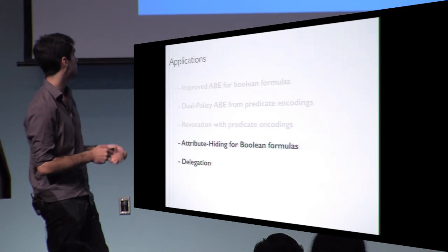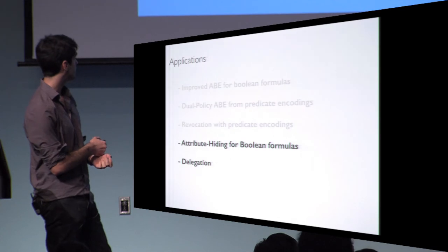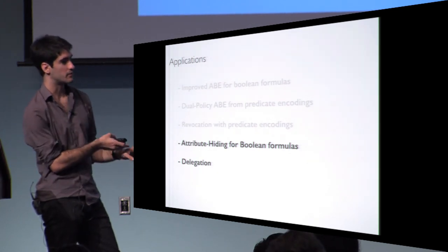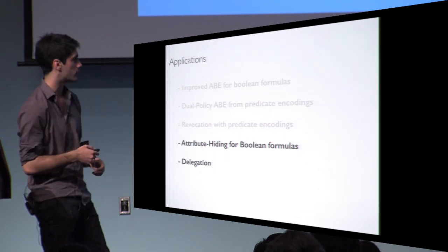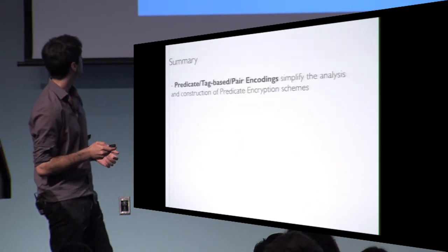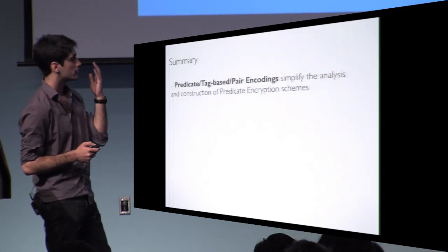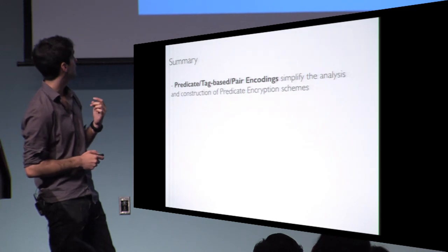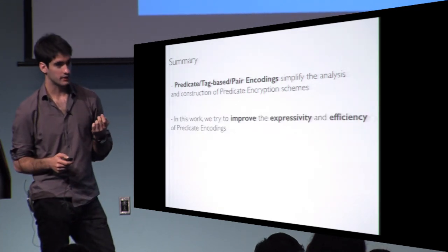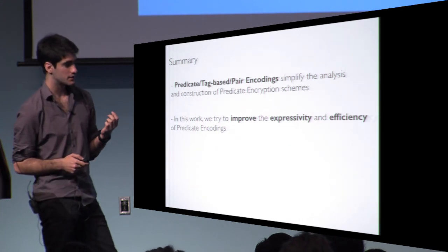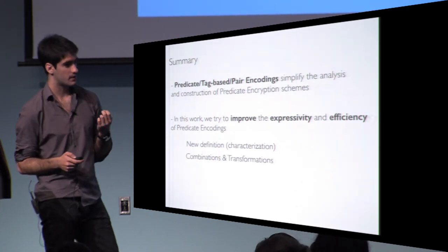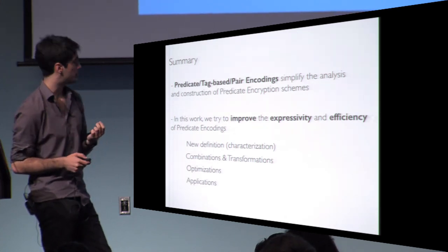There are other possible applications detailed in the paper. For example, we show how to improve predicate encodings to support delegation, allowing you to take your secret key and weaken it into a less powerful delegatable key. This can also be used to achieve forward secrecy if you destroy the original key. In summary, this work considers the framework of encodings that simplify the analysis and construction of predicate encryption, focusing on predicate encodings to improve their expressivity and efficiency through a new notion, transformations, optimizations, and applications. We also characterize the relations between encoding primitives.